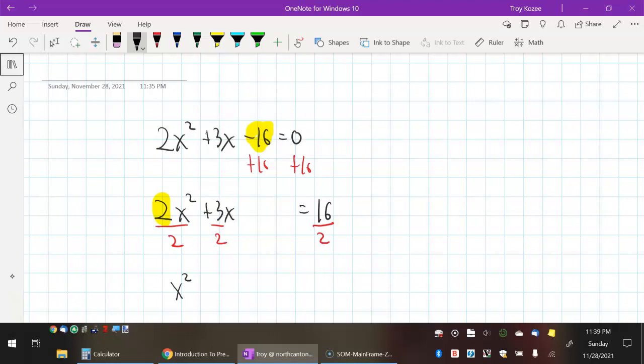Now, the consequence is my middle term is a fraction. That's not a deal breaker. In fact, it's not that bad at all. You just have to be a little more careful when you complete the square. And on this side, I have 8.